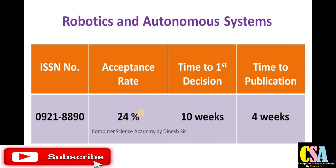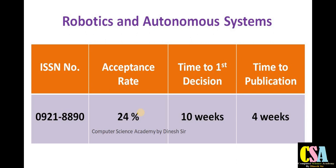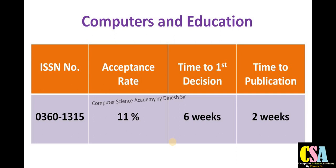The next journal is Robotics and Autonomous Systems. The ISSN number is 0921-8890. The acceptance rate is very good — 24 percent — so there are more chances to publish your research paper if you have good or original content. The total time from first decision to publication is 16 weeks, so most probably within three months your research paper will get published.